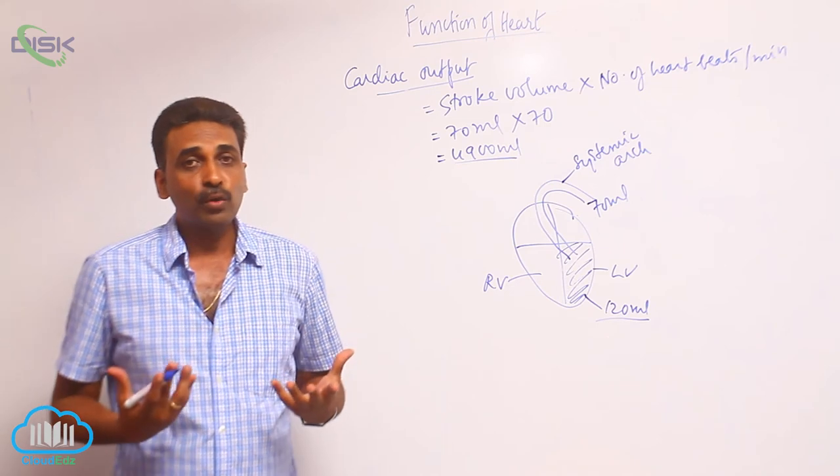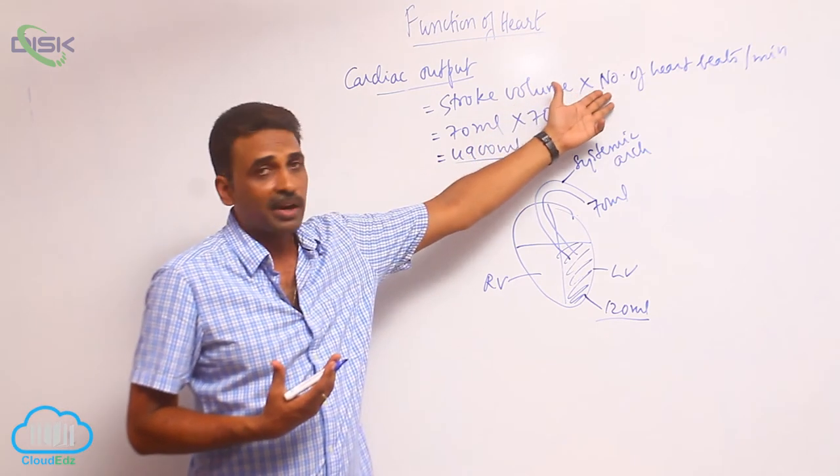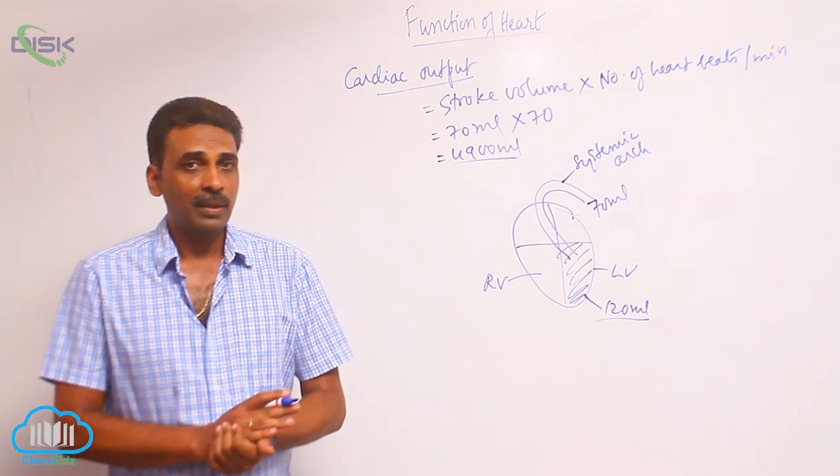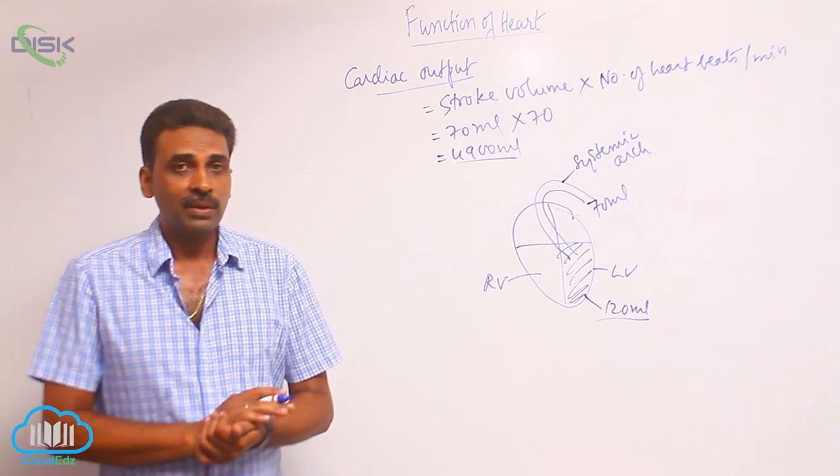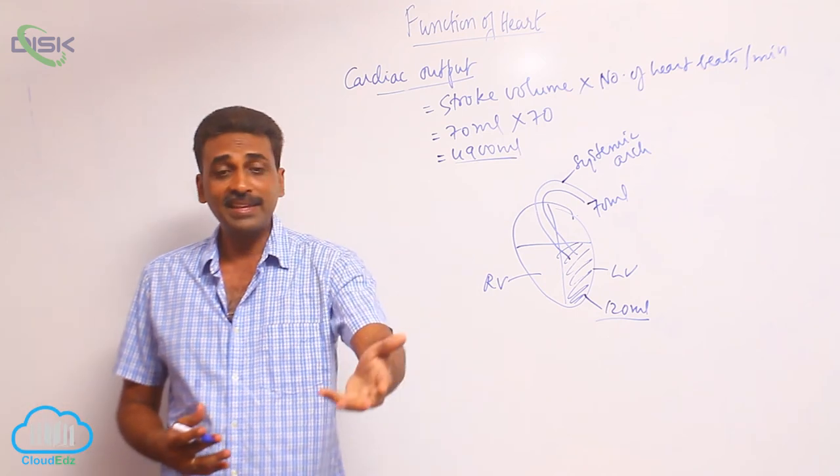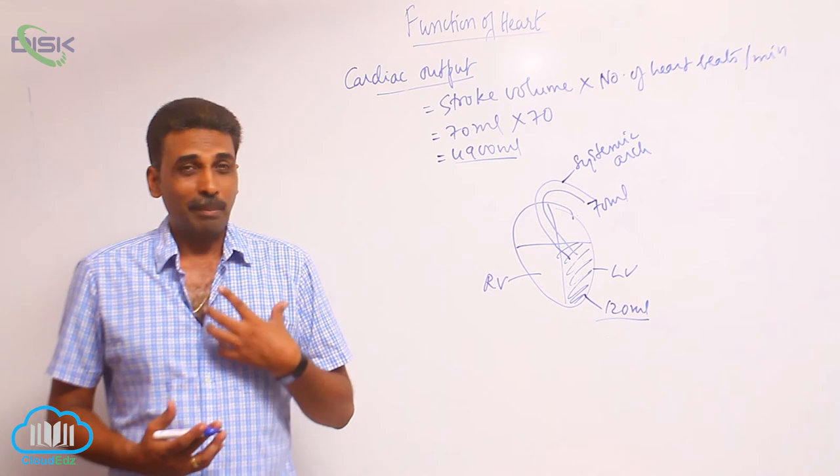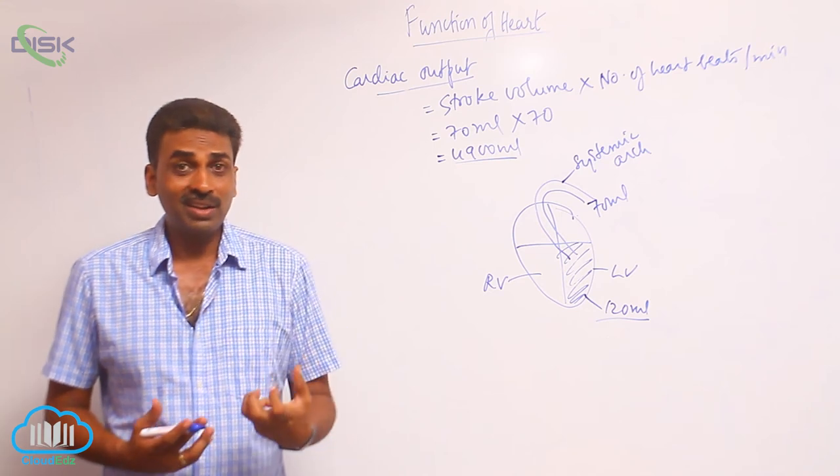When sympathetic nerves are stimulated, the cardiac output, the number of heartbeats per minute - the rate of heartbeat - they are increased. That is an emergency condition. Say for example, a snake is just before us. Under that condition, my heartbeat gradually increases.